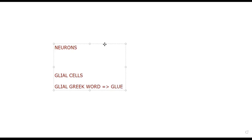Glial means to stick things together. So glial cells stick things together. They are classified into five to six types according to the nervous system, which we'll discuss.